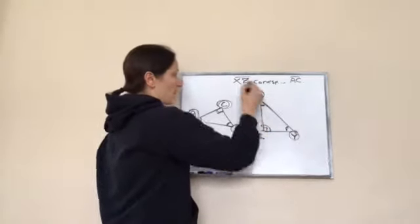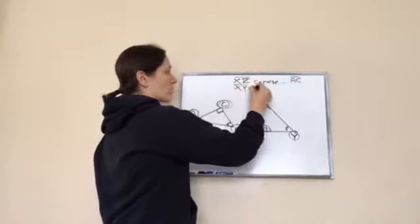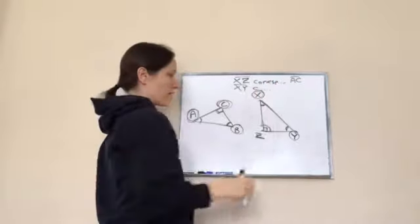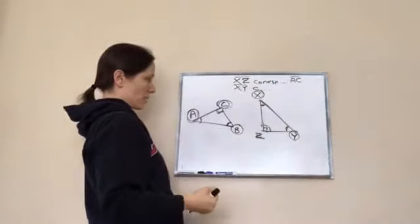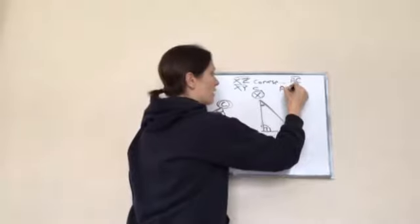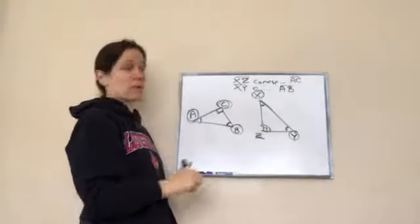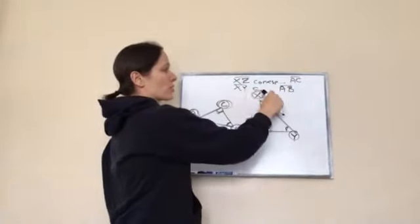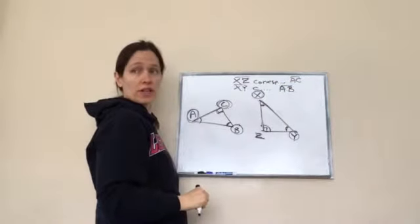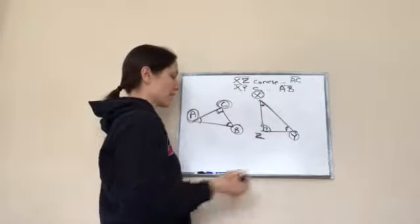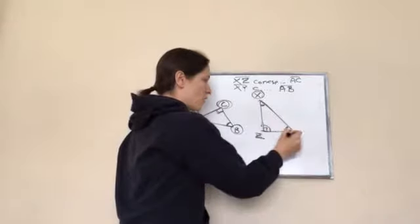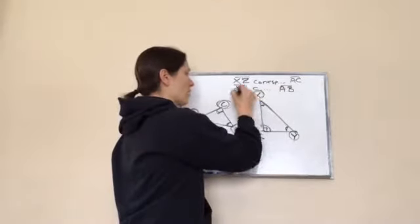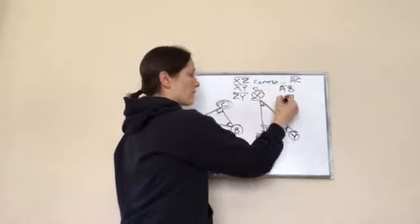What about XY? XY corresponds with AB, very good. And I would put a line over top of it to show line XY corresponds with line AB. Good job, you feel like you understand that? And then the last one would be line ZY corresponds with BC.